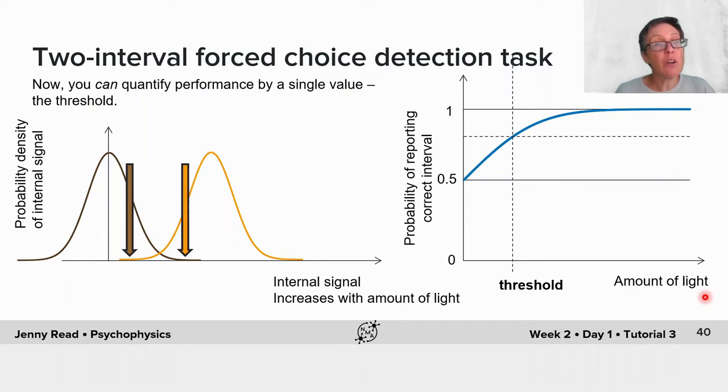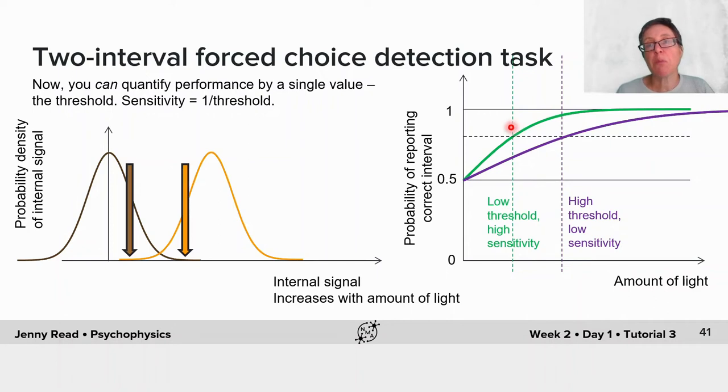Now you can quantify performance by a single value, which we call the threshold. You can define some percent correct in between chance at 50% and perfect at 100%, and that'll be your threshold. People with a low threshold genuinely are more sensitive to light and people with a high threshold are less sensitive.